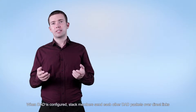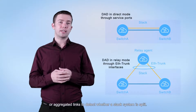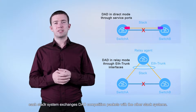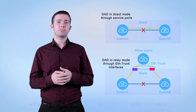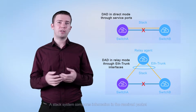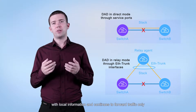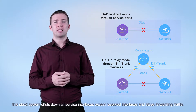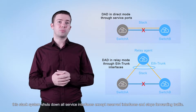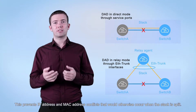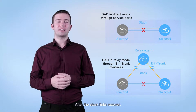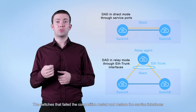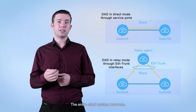When DAD is configured, stack members send each other DAD packets over direct links or aggregated links to detect whether a stack system is split. If the stack system is split into multiple stack systems, each stack system exchanges DAD competition packets with other stack systems. A stack system compares information in the received packet with local information and continues to forward traffic only if its local information is better than the received information. If the received information is better, this stack system shuts down all service interfaces except reserved interfaces and stops forwarding traffic. This prevents IP address and MAC address conflicts. After the stack links recover, the multiple stack systems form a single stack system, the switches that failed the competition restart and restore the service interfaces to the up state, and the entire stack system recovers.